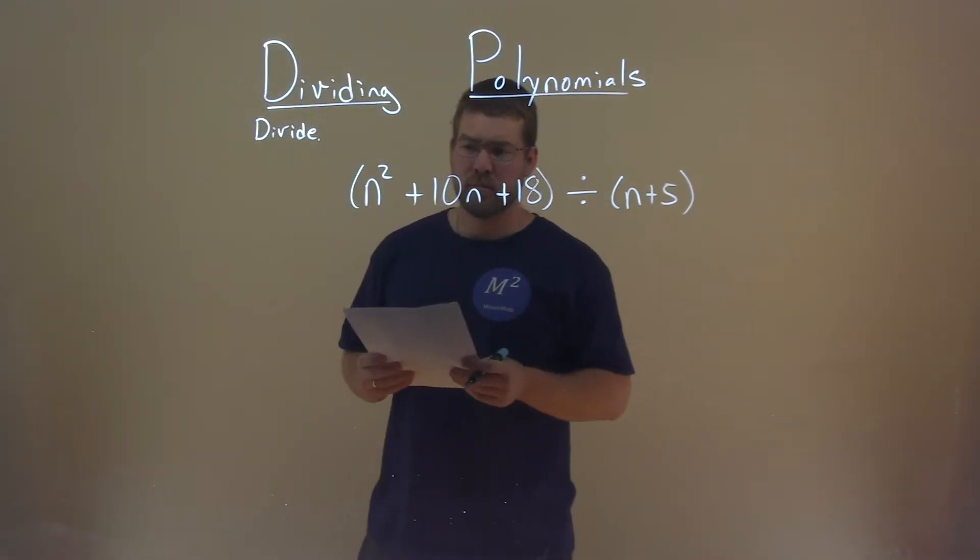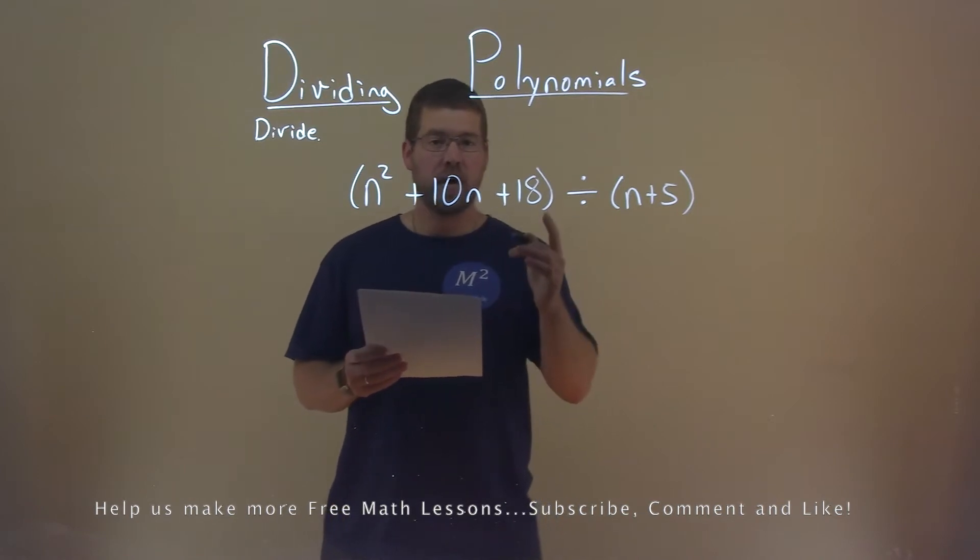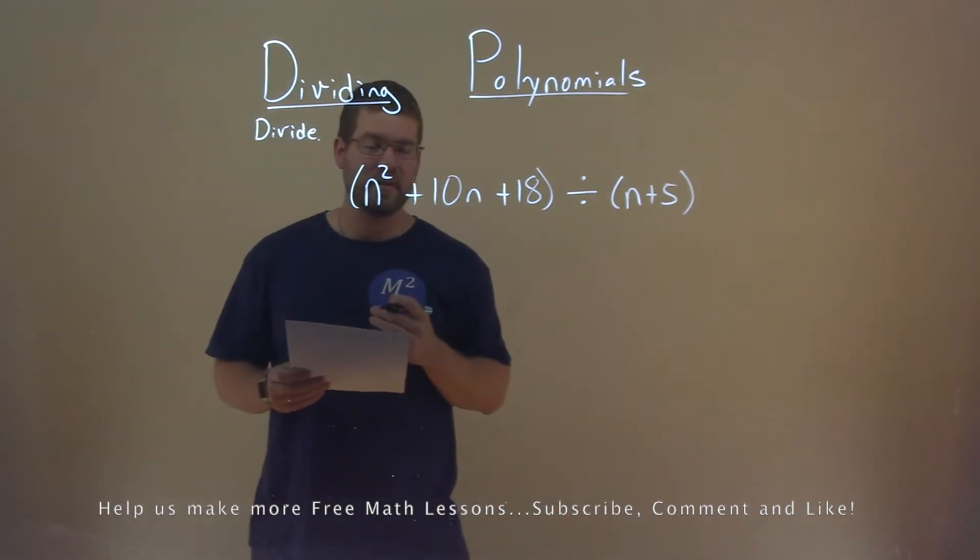We're given this expression: n squared plus 10n plus 18 divided by n plus 5, and we need to divide this.